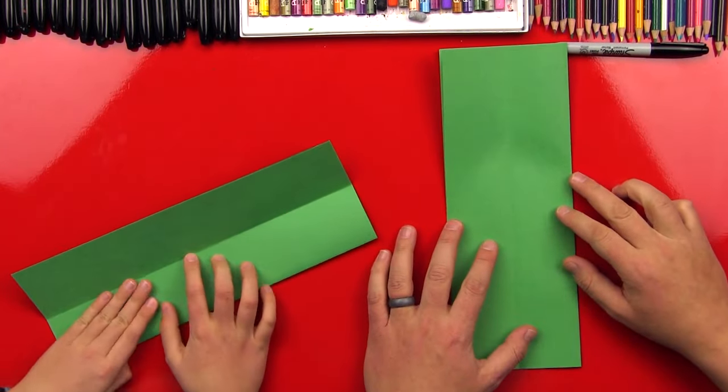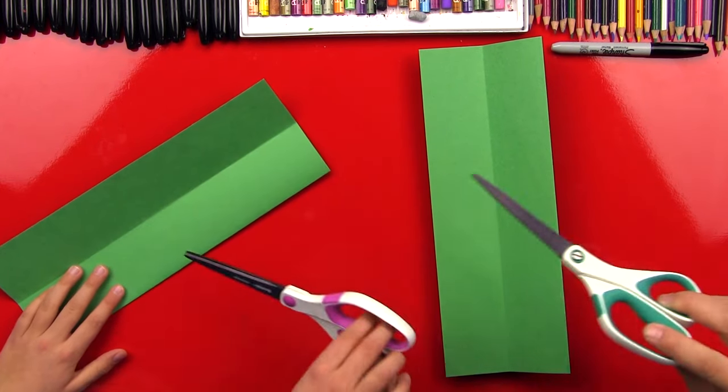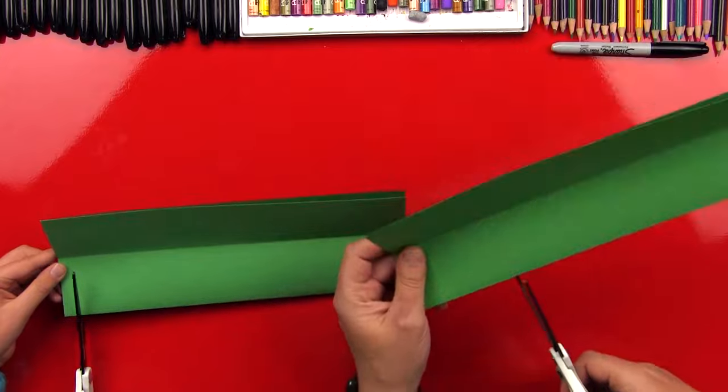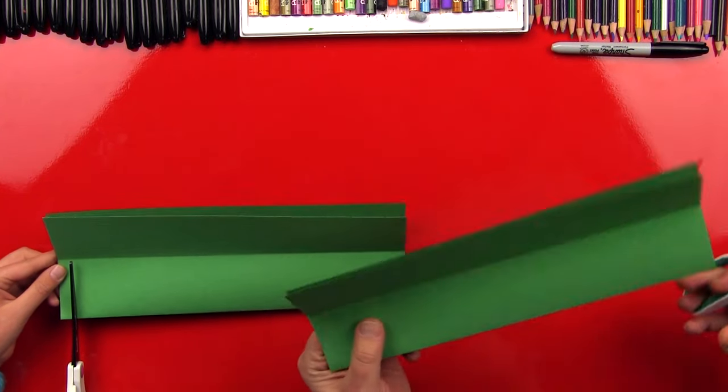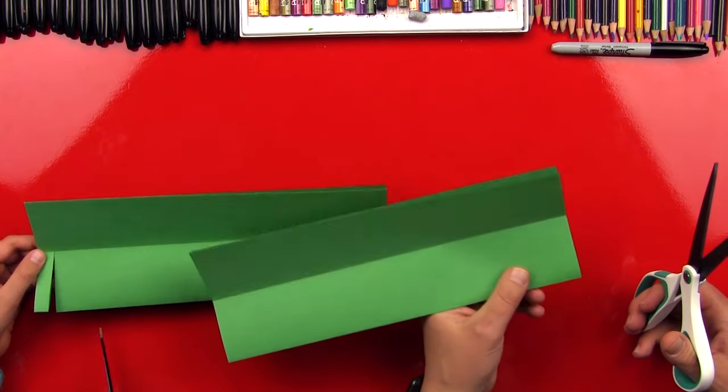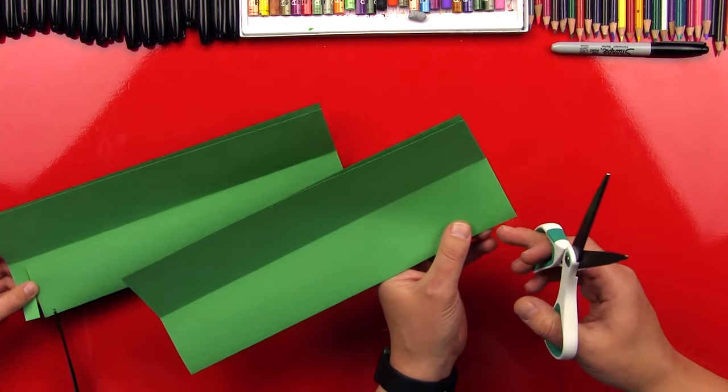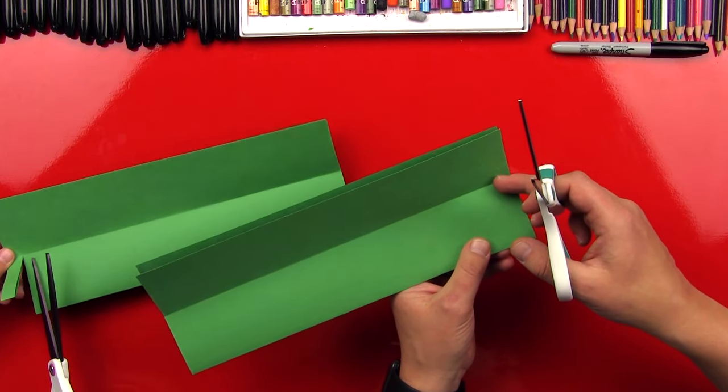And then you need your scissors. Alright, I got them. You want the pink ones? Yeah. Now we cut tons of like slots. Okay, slots. But how long do we make them? About like a centimeter wide. And then we cut all the way to the fold.